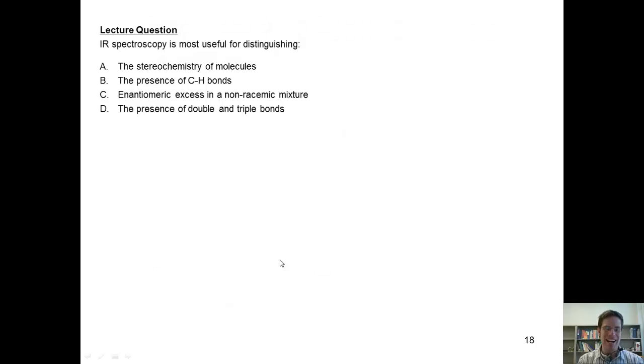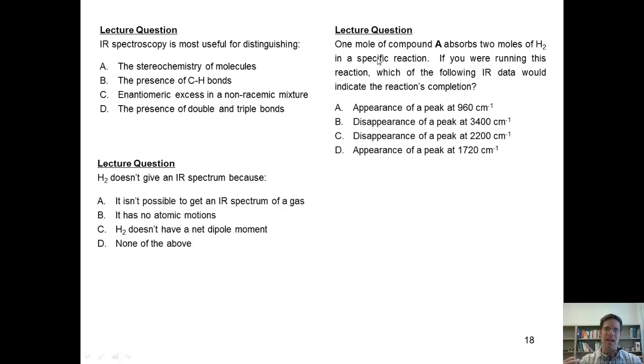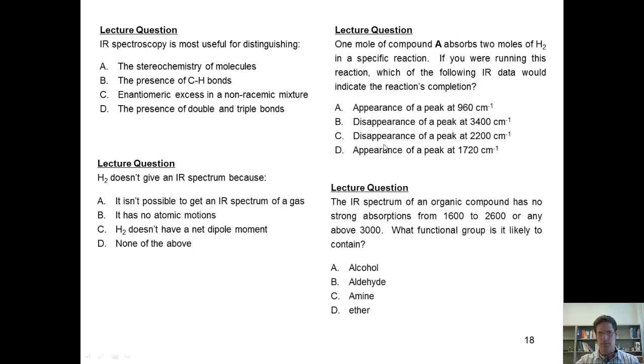So here are our IR standardized exam-like questions. First question, IR spectroscopy is most useful for distinguishing what? Next question, H2 doesn't give an IR spectrum because why? Next question, one mole of compound A absorbs two moles of H2 in a specific reaction. What reaction could that be? If you were running this reaction, which of the following IR data would indicate the reaction's completion? Next question, the IR spectrum of an organic compound has no strong absorptions from 1600 to 2600 or any above 3000. What functional group is it likely to contain?